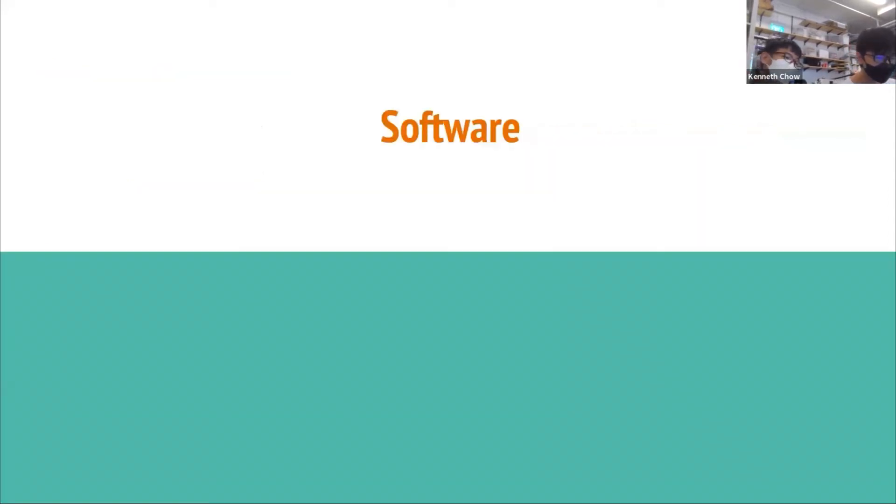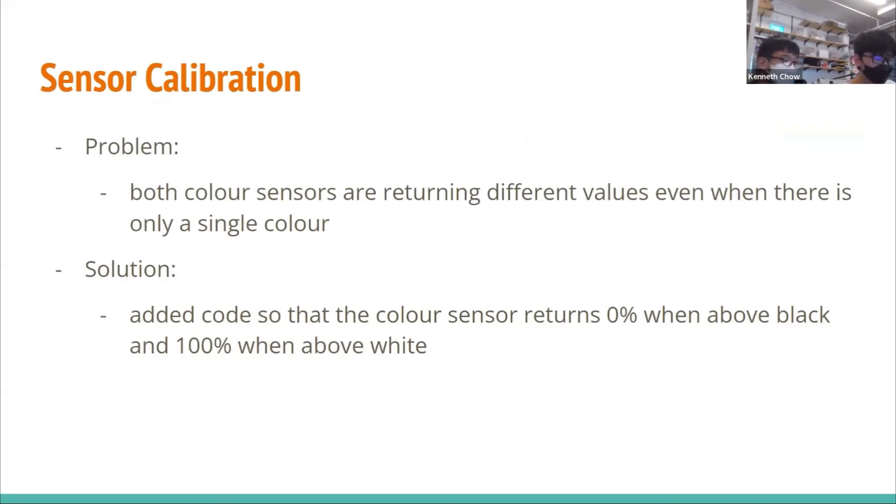Next, we will be talking about the software which we did in Python. Now, we will be moving on to the sensor calibration part. Before calibration, both color sensors kept on returning different values, even when they were sensing the same color. We added code so that the color sensor returned 0% when above black and 100% when above white.